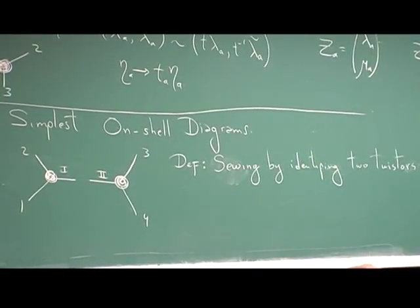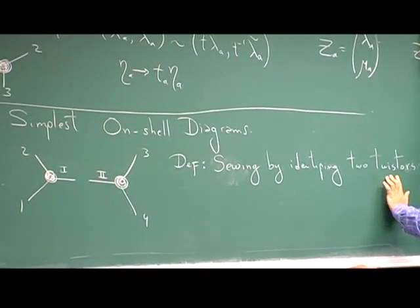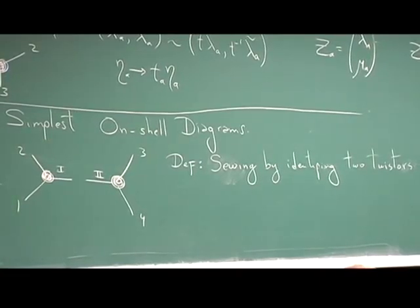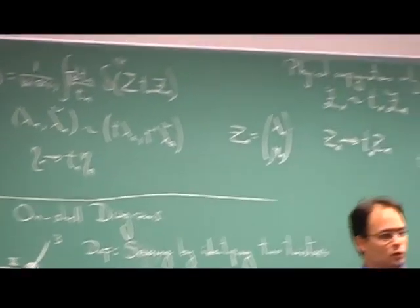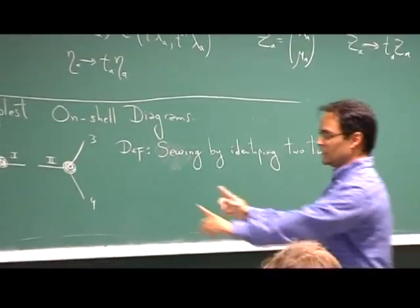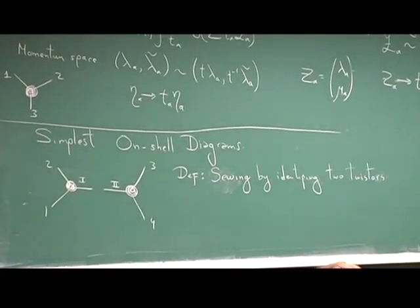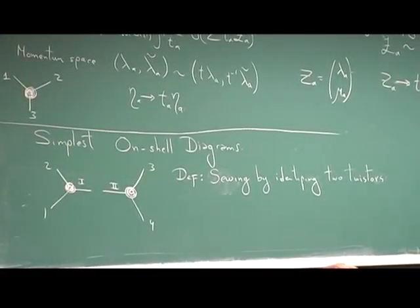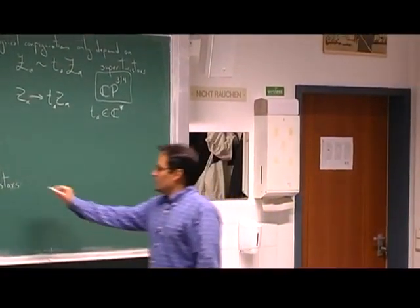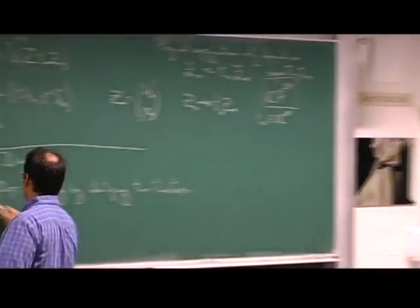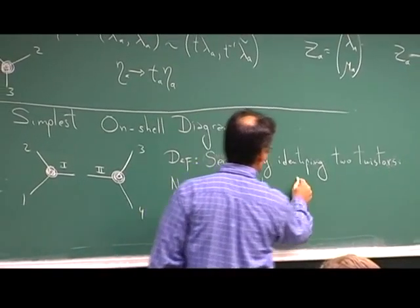That's almost the only operation we can do here, or at least the most natural one. But how can we do that? If you have one twister and another that differs by a rescaling, they are supposed to be the same twister. So when we identify two twisters, we should allow for a rescaling. We need to define a delta function that identifies things up to a rescaling — we need a projective delta function.